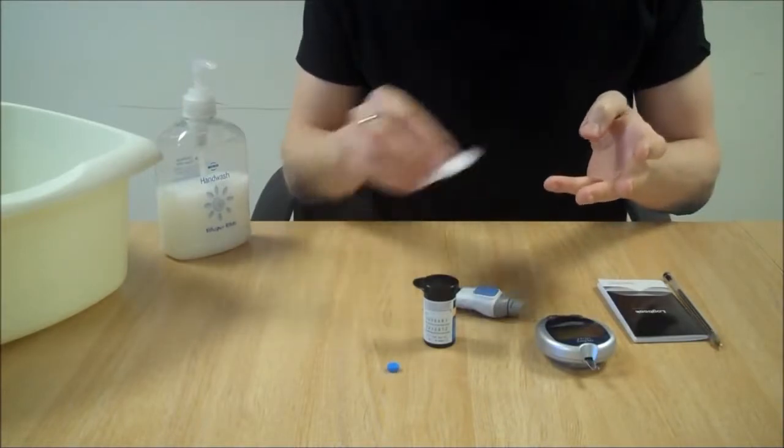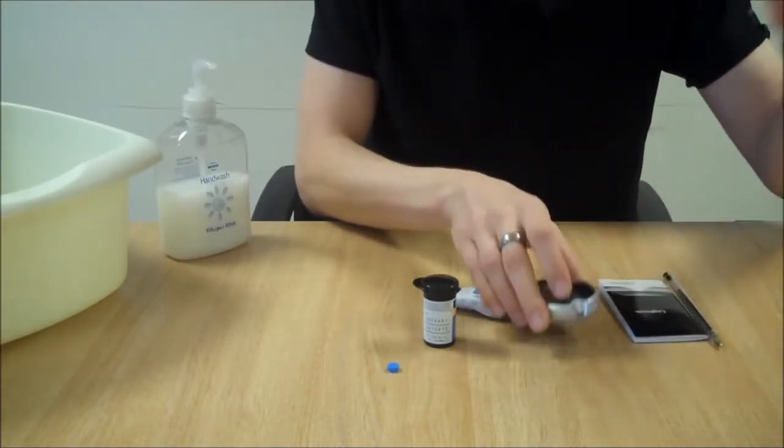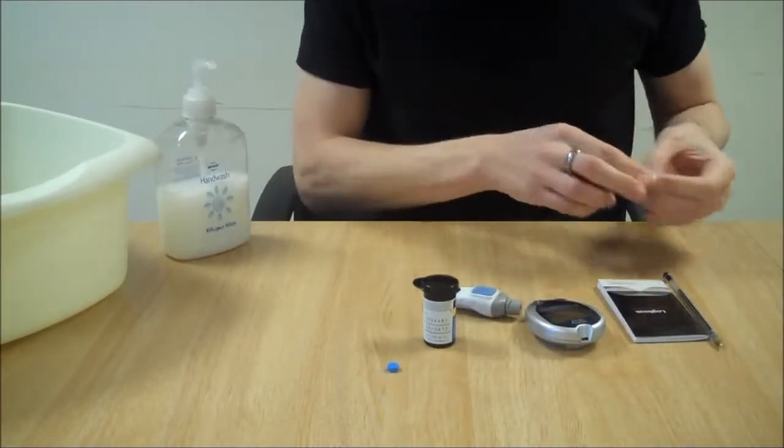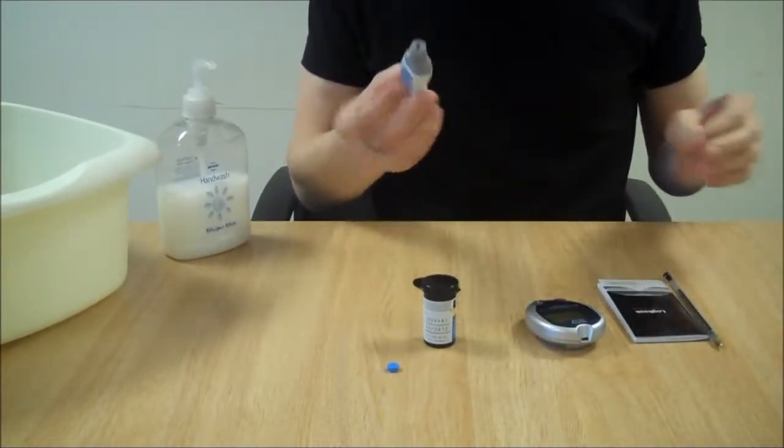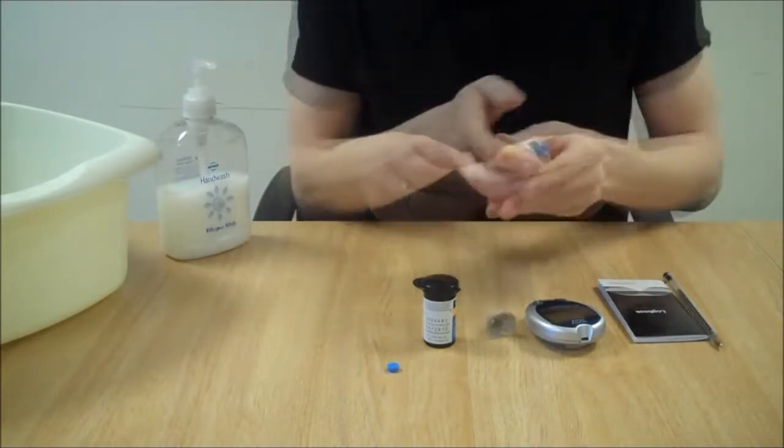Just clean your finger. Clean the blood off the fingers. Remove the test strip which can be thrown away. And make sure that the lancet in the machine is disposed of in a sharps bin.